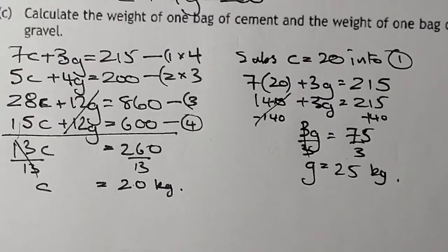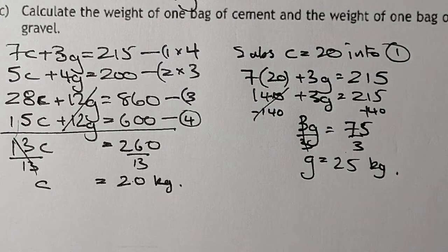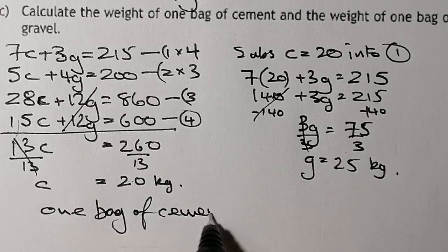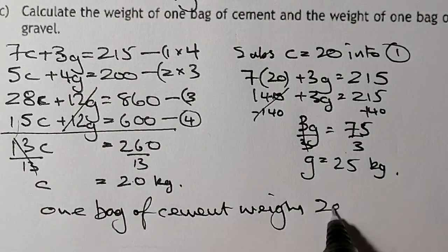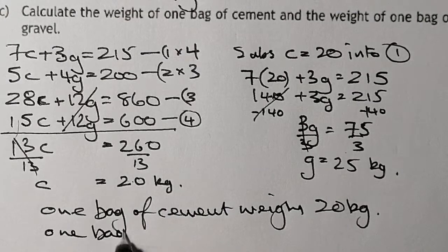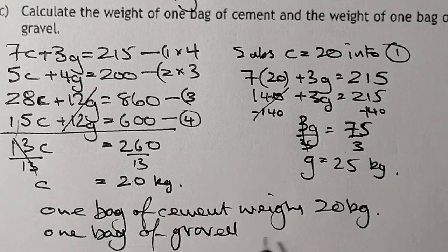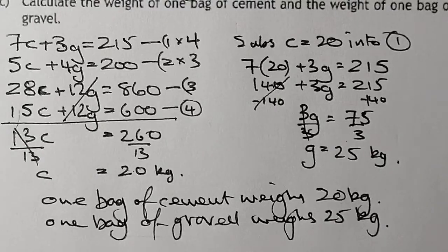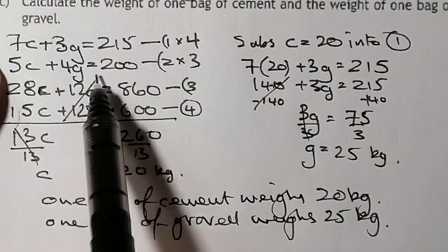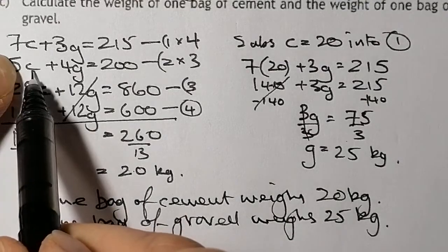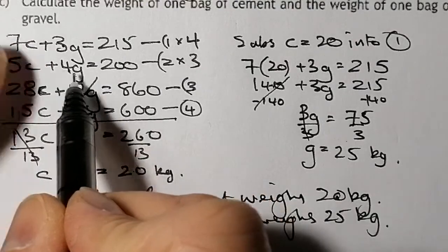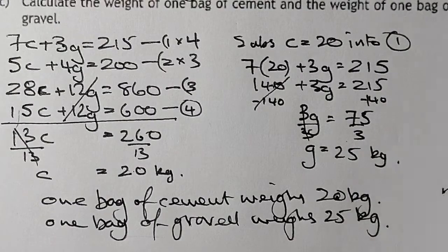For part C, all we were asked was to calculate the weight of one bag of cement and one bag of gravel. So: one bag of cement weighs 20 kilograms, and one bag of gravel weighs 25 kilograms. That's the first question complete. A good check is to substitute both values back — 5 times 20 is 100, plus 4 times 25 is another 100, and 100 plus 100 equals 200. That confirms we've got it right.